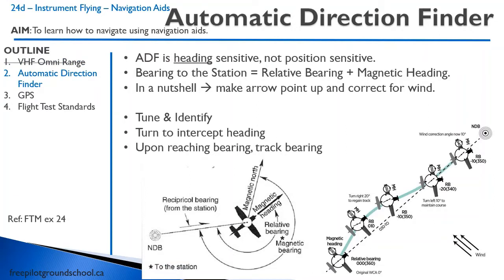Secondly, we have the automatic direction finder. These are getting really old — I can't remember the last time I used an ADF in a jet, probably almost 20 years ago. The nice thing about them is they're super cheap to install. You can almost build your own non-directional beacon at home; it's just an LF or MF radio. You can actually tune into AM radio stations and fly to those antennas. The important thing to remember: the ADF is heading sensitive, not position sensitive. As you change heading, the arrow points differently because it always points towards the NDB.